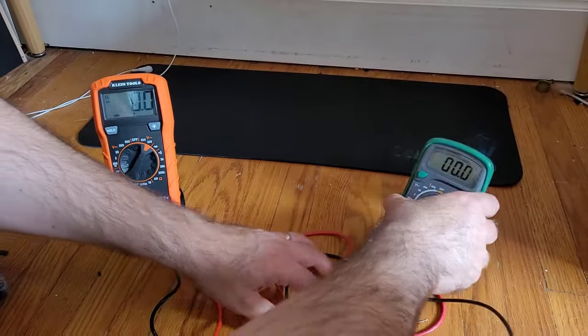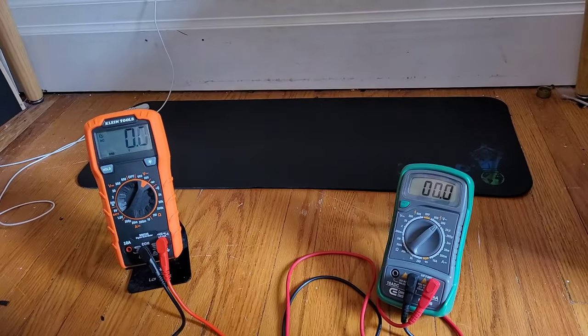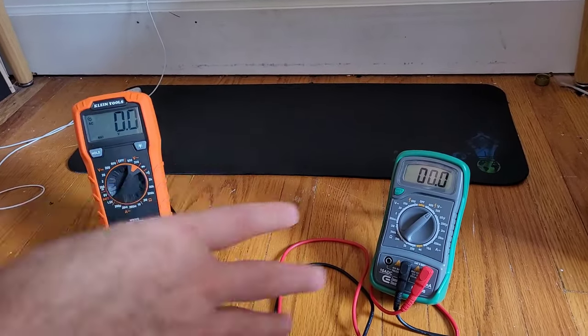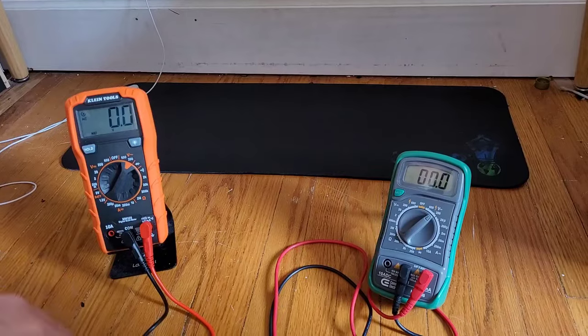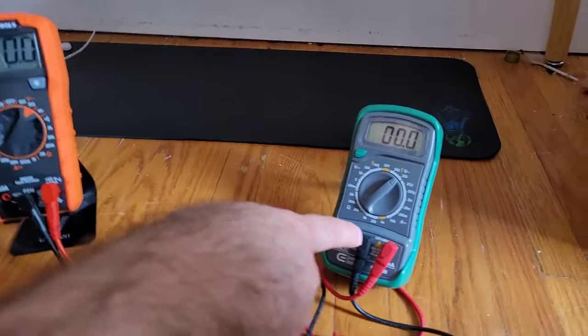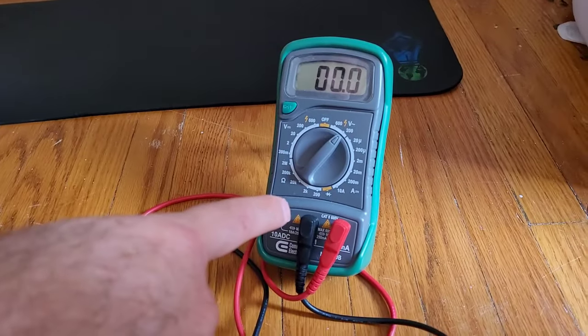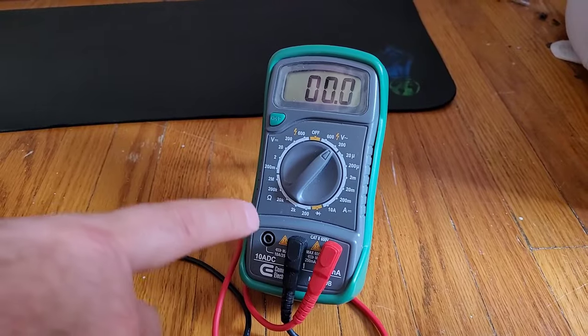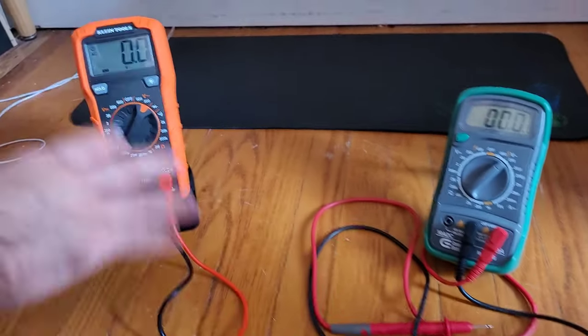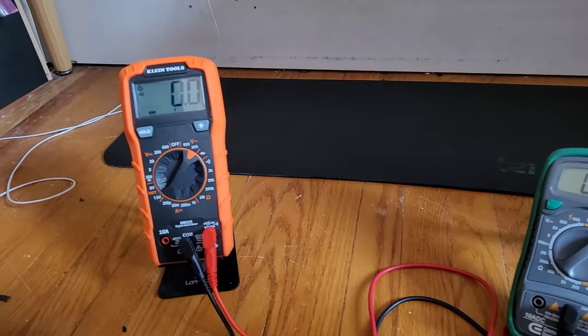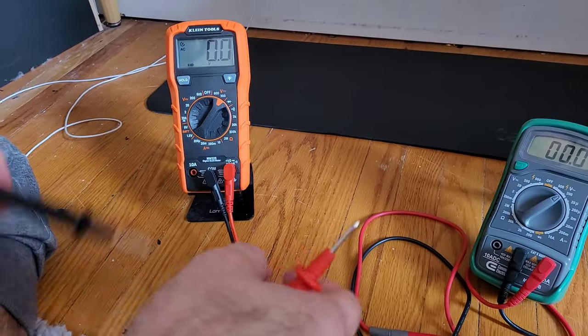So before you send your product back to whatever manufacturer, it's probably not the mat, it's probably just your multimeter. This mat wasn't working for me before, and I thought I was having a problem with my mat, but there's no problem with that at all. I bought another one, a newer one, and it shows that it works just fine.